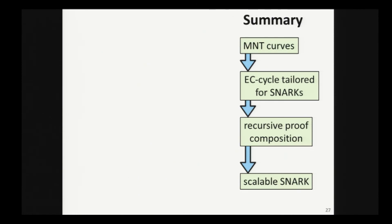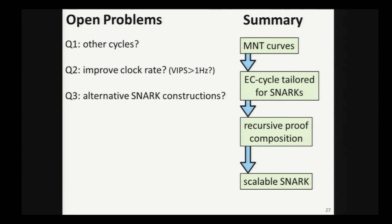I want to conclude, I want to give you three interesting open questions. The first one is, are there other cycles? I mean, MNT curves are the only ones that we found. Maybe there are others. Second one is, how can one significantly improve the hertz rating? Can one go well above one hertz? And finally, are there alternative SNARK constructions that perhaps don't run into the characteristic mismatch problem? Maybe they're more amenable to bootstrapping.